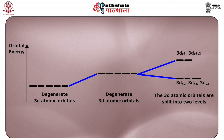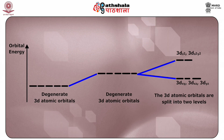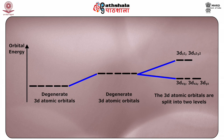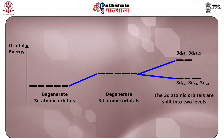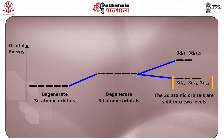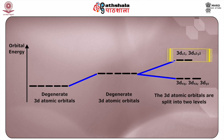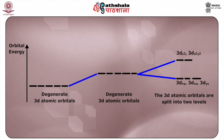Here we will talk only about the most common type of geometry observed in coordination complexes, which is octahedral, comprising six ligands approaching the metal ion along the three coordinate axes in the positive and negative directions. The splitting of orbitals shows that dxy, dxz, and dyz are lowered in energy, while dx²y² and dz² are raised in energy. This is the splitting of the d orbitals in an octahedral ligand field.